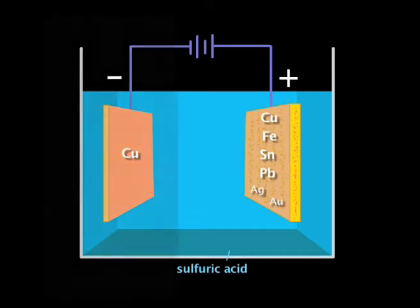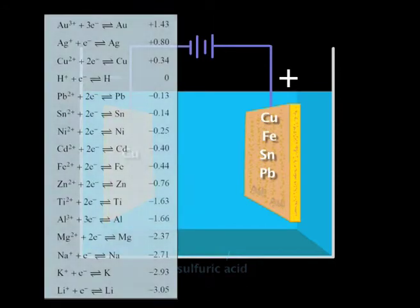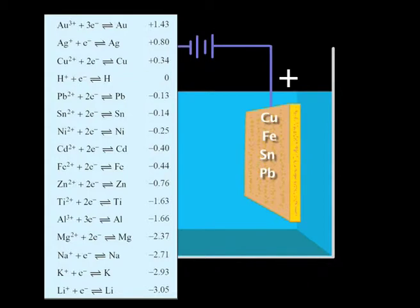Whoever thought up this process obviously knew their electrochemical series. A small voltage will be enough to drag electrons from the more reactive metals, including copper, converting them to ions which move into the electrolyte.